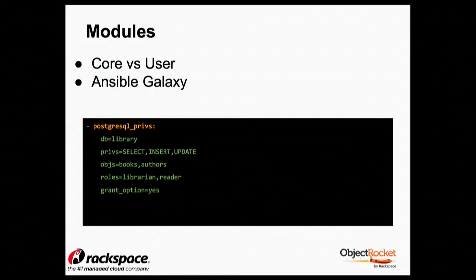There's also Ansible Galaxy — user-contributed modules. If you'd like to build your own module, you can put them out there and the community can pull those off Git. Here's an example — postgres_privs — basically saying for the DB library, allow select, insert, and update to the roles librarian and reader with grant. So if you needed to execute this on 20 databases and ensure that role and privileges existed, it's a one-liner in Ansible.